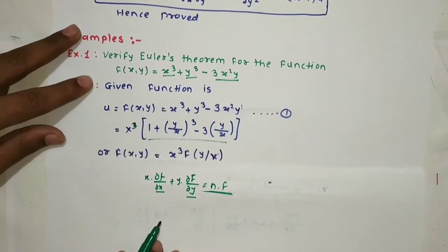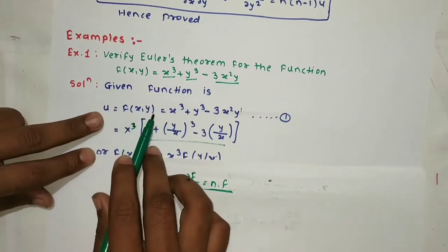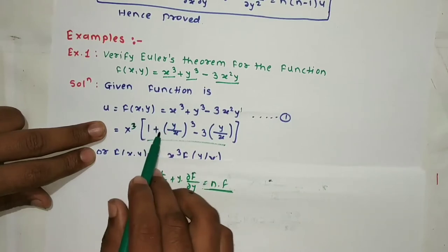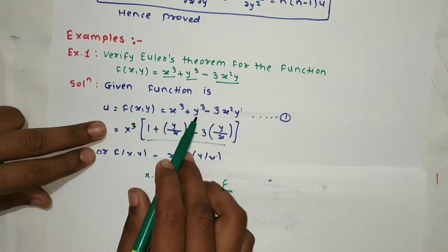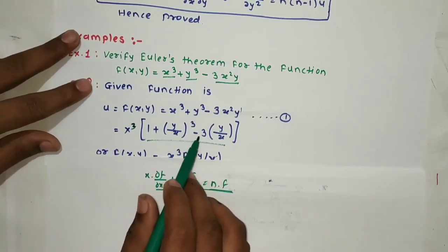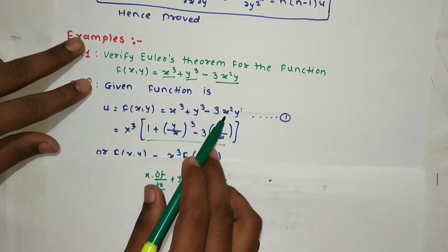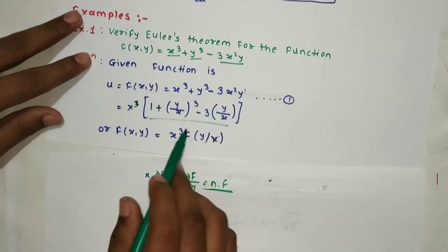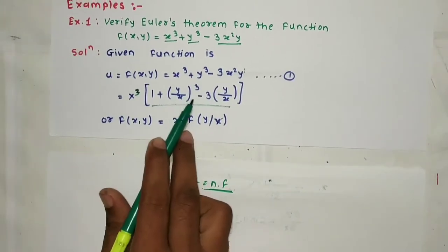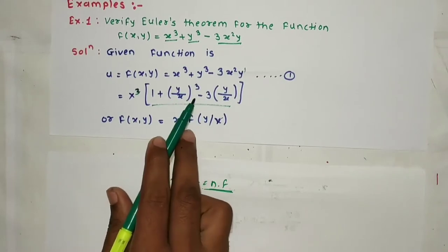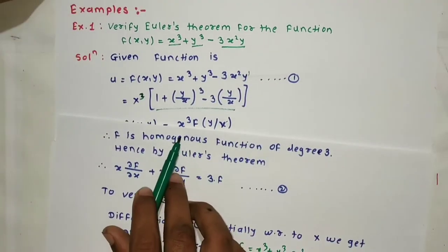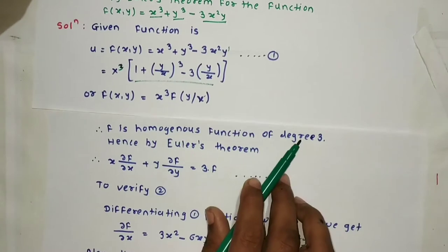We want to show this. We have u = f(x, y). We take x³ as common factor — what remains is 1. Then the terms with x³ go to the denominator. So we get (y/x)³ minus (y/x), and f(x,y) = x³ · f(y/x). This equation is converted to the form f(y/x), confirming it is a homogeneous function of degree 3.